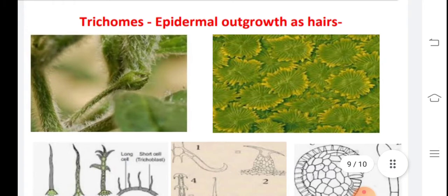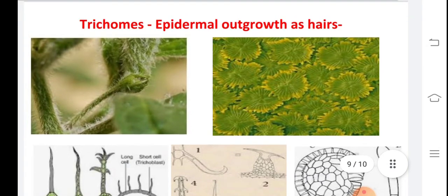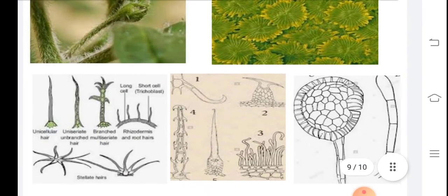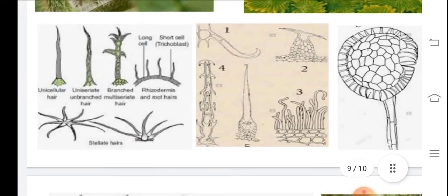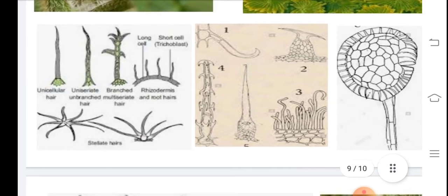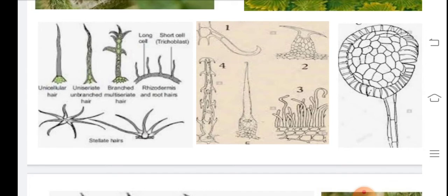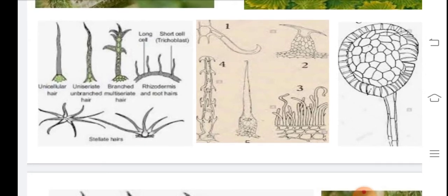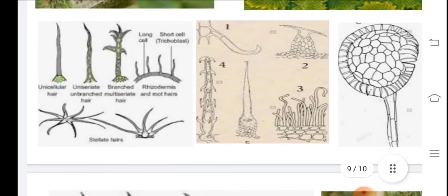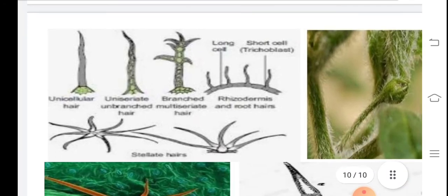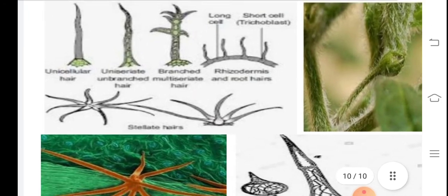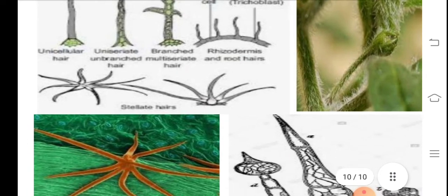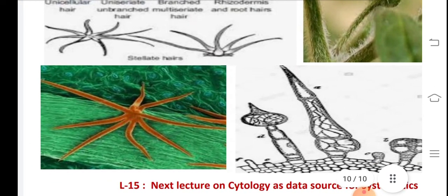Direct photographs from plants show how trichomes appear on the leaf — there are different star-shaped multicellular trichomes and unicellular trichomes. The right-hand diagram shows glandular hair, which is one important character. Some magnified diagrams show star-shaped trichomes and photographs for observation.